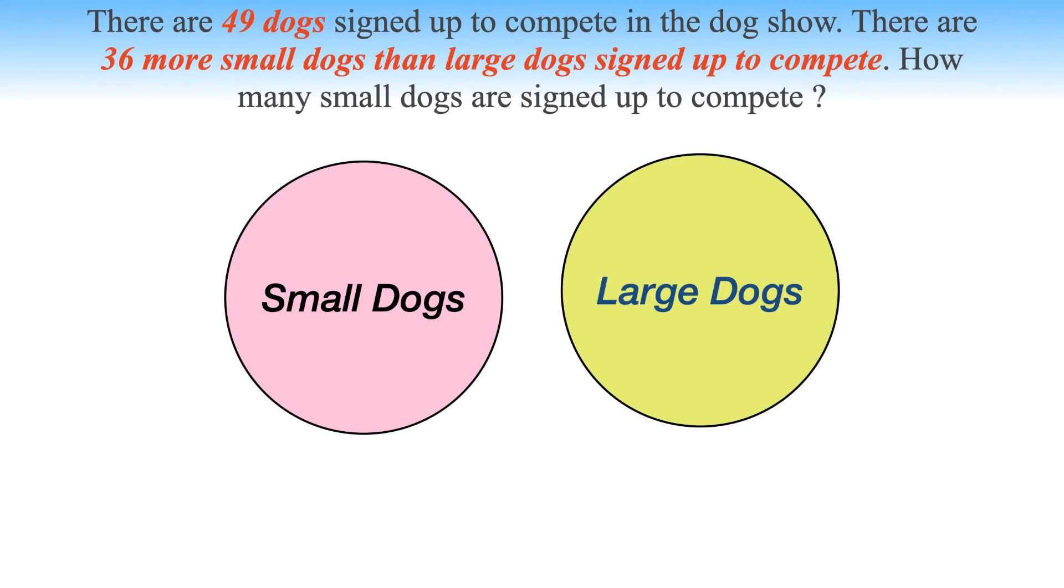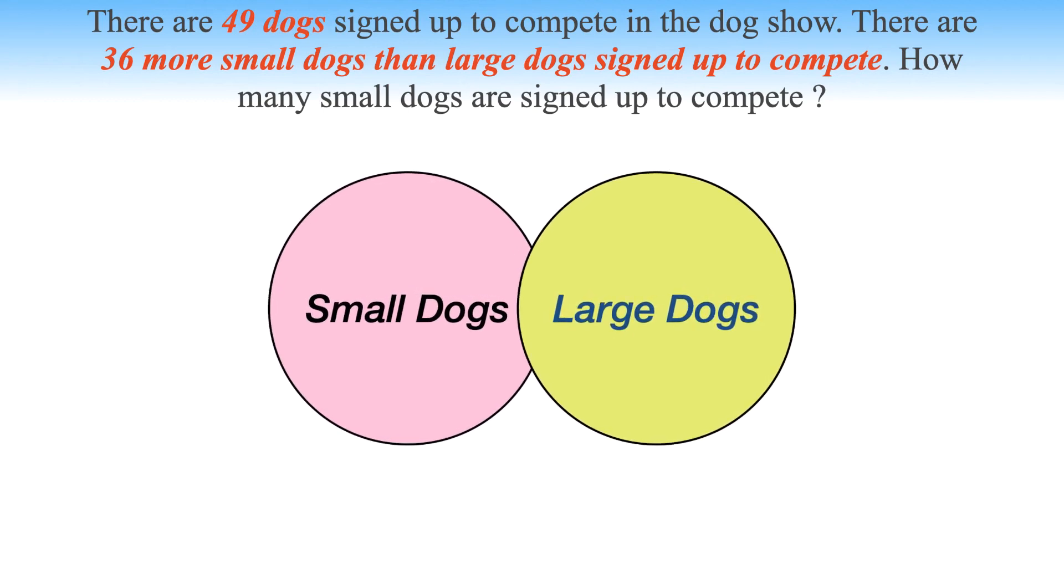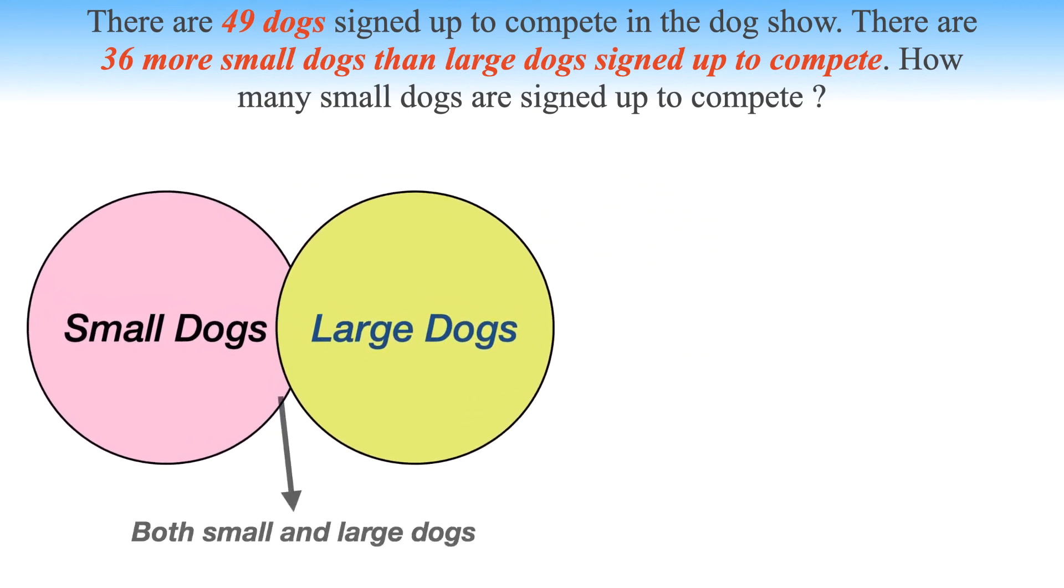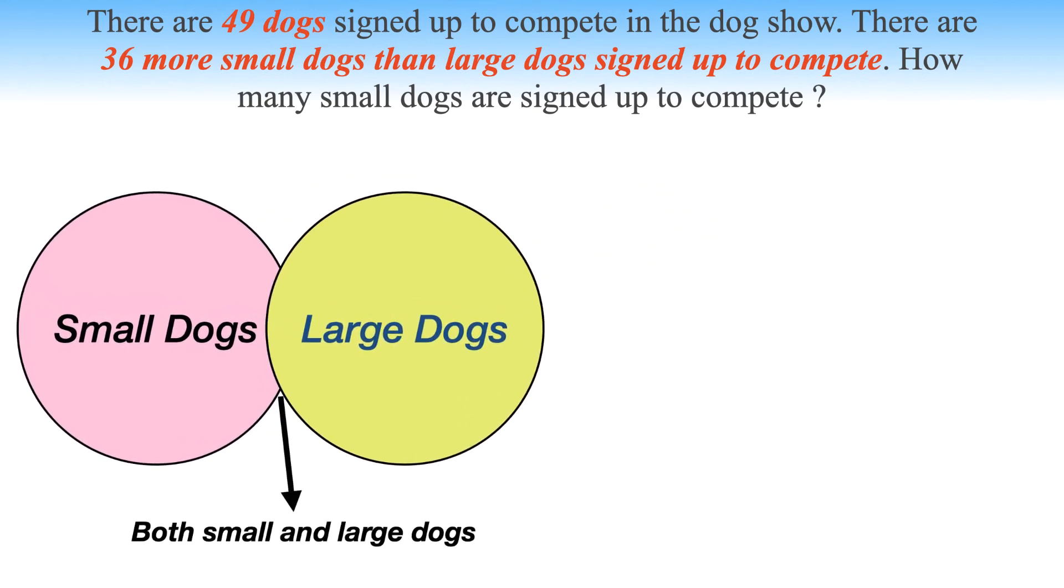One way to think is that there's a possibility that at least one dog is registered in both the small and large categories. Thus, the sum of small dogs and large dogs is greater than 49 because the categories overlap. There are multiple possible solutions. Here are some possible ways: